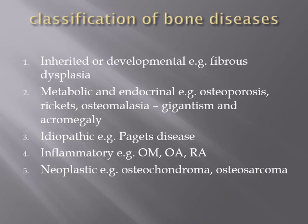We add inherited or developmental diseases, such as fibrous dysplasia, which is a disorganization of tissue formed basically from fibrous tissue that interferes with normal bone formation. We also include metabolic and endocrinal diseases. Osteoporosis, rickets, and osteomalacia are types of metabolic bone diseases.